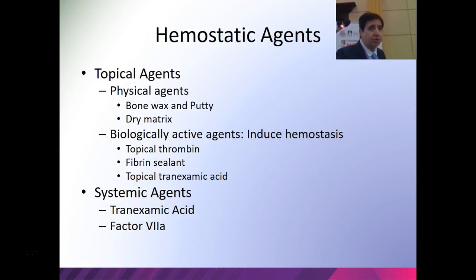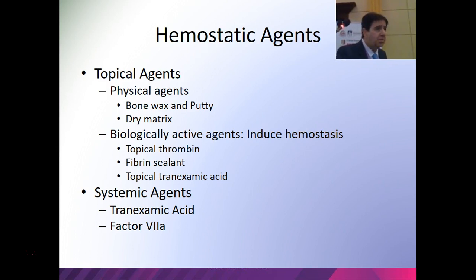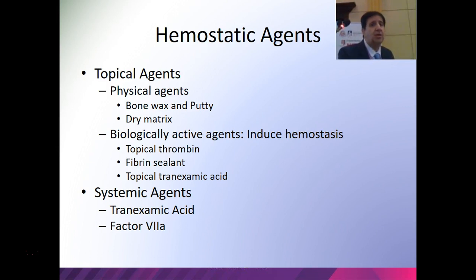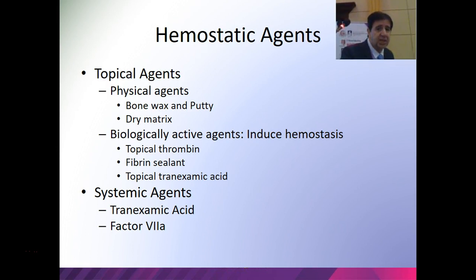I'll divide all those hemostatic agents into functional groups based on how they work. I will first talk about topical physical agents, then the biologically active agents, and then I'll move to systemic agents — basically tranexamic acid and recombinant factor 7a.